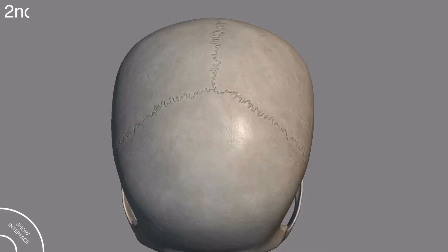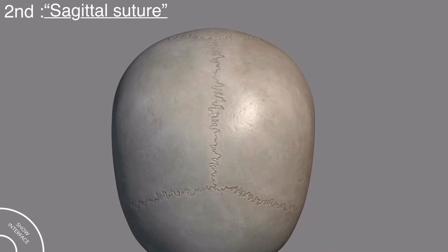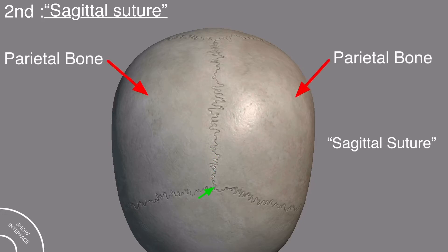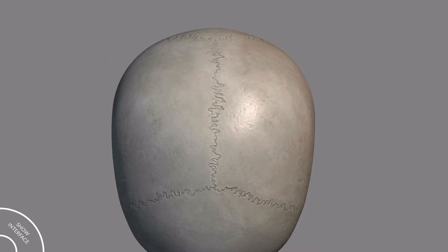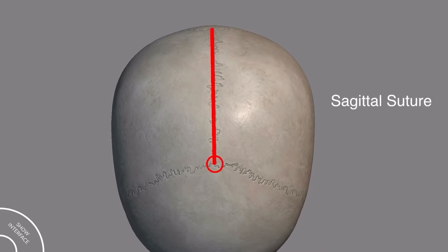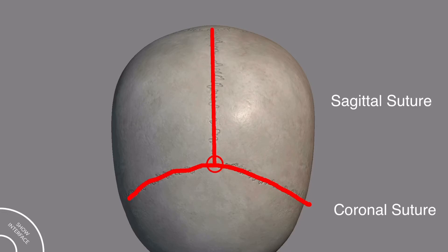The next suture is the sagittal suture, which is present between the parietal bones. It is named the sagittal suture because it lies in the sagittal plane. The point where the sagittal suture meets the coronal suture is called bregma.